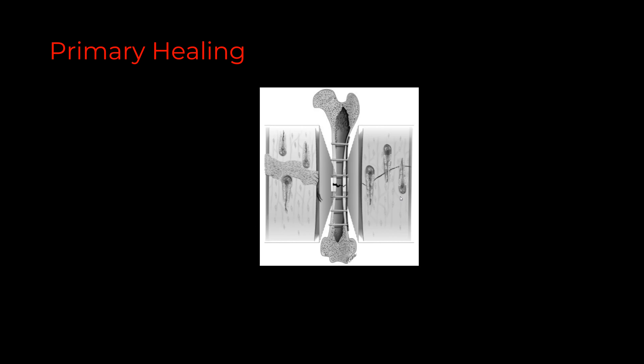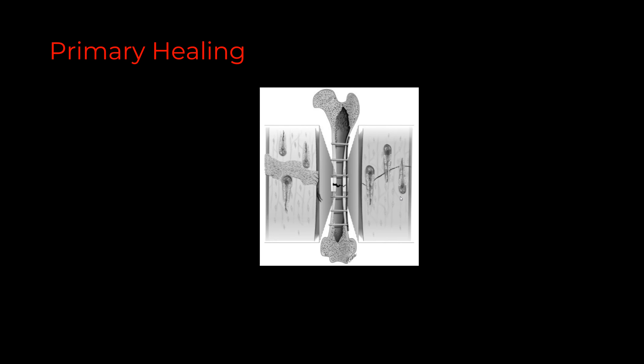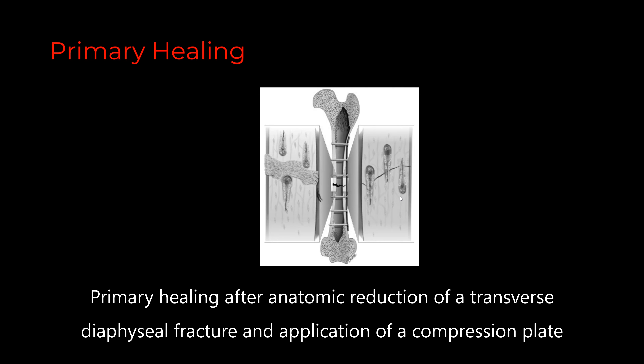Myself Dr. Kadir Stalin. Fracture healing happens either as primary or secondary, or a combination of both, based on the construct. Primary healing, or cortical healing, occurs with rigid immobilization. In this picture, primary healing after anatomic reduction of a transverse diaphyseal fracture and application of a compression plate is shown. Where the plate lies, the near cortex undergoes primary contact healing. Thus, contact healing occurs with an absolute stability construct.